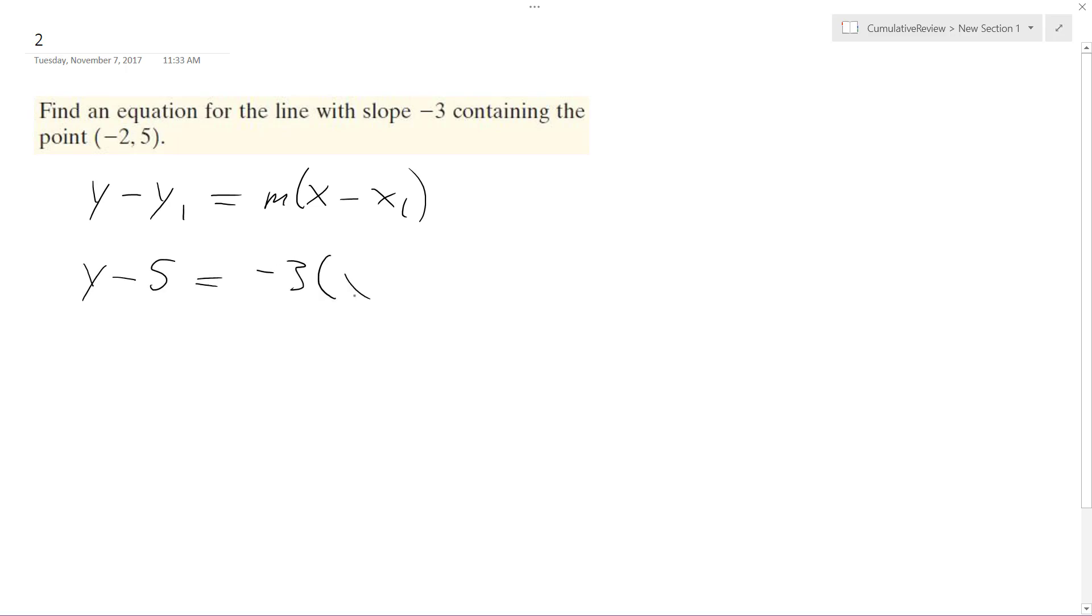negative three times x minus negative two. So we get y minus five equals negative three x, and this is actually plus two, so we get minus six.